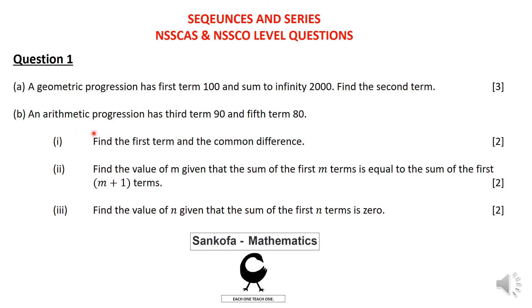Part B is divided into three sections. They are giving you a different progression. The third term is 90 and the fifth term is 80. For part Roman 1, find the first term and common difference. Roman 2, find the value of M given that the sum of the first M terms is equal to the sum of the first M plus 1 terms. The third part says find the value of N given that the sum of the first N terms is 0.